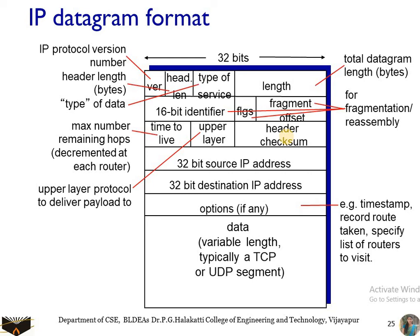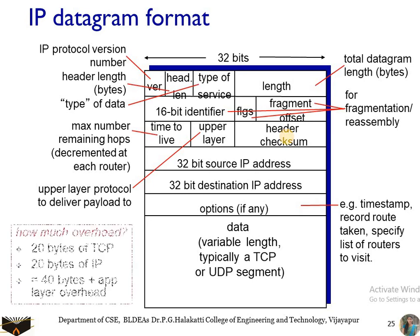The next field covers source and destination IP addresses. When a source creates a datagram, it inserts its own IP address into the source IP address field and inserts the destination address into the destination IP address field. Based on this, the DNS looks into its table and finds the appropriate path from source to destination.